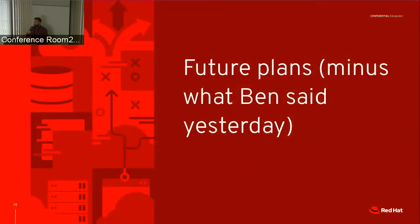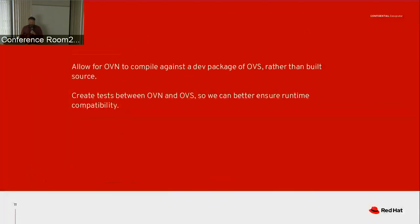I had a few slides about future plans for OVS, but Ben covered things like mailing lists and the OVN org website. On the technical side, one of the things we require right now when building OVN is that you have to have the OVS source built somewhere and point OVN to that built source. What we'd much rather be able to do is install from your OS the developer dev version of the OVS package and just be able to build OVN from that. We also want to be able to test OVN-OVS compatibility to ensure a better experience.